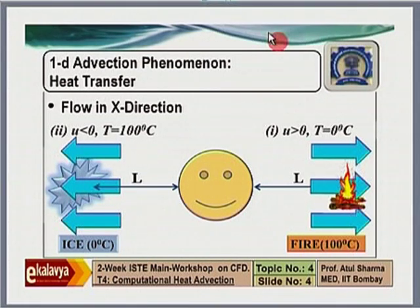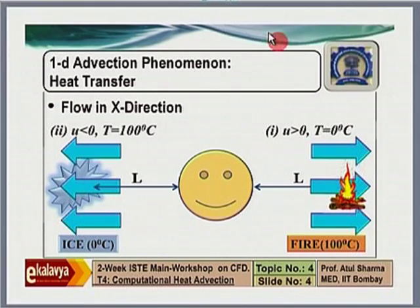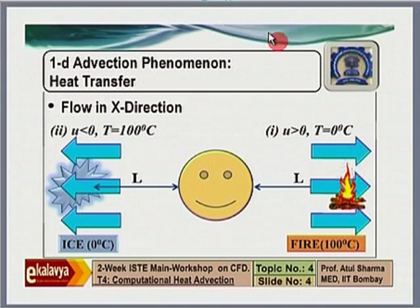Recall the picture from the first lecture: if you are standing between ice and fire and the flow velocity is very large from the ice side, then conduction heat transfer is negligible and the advection mode is dominant. If flow velocities are very large, conduction heat transfer is very small — like if z = x + y and y is very small, z ≈ x. So total heat transfer is by pure advection.